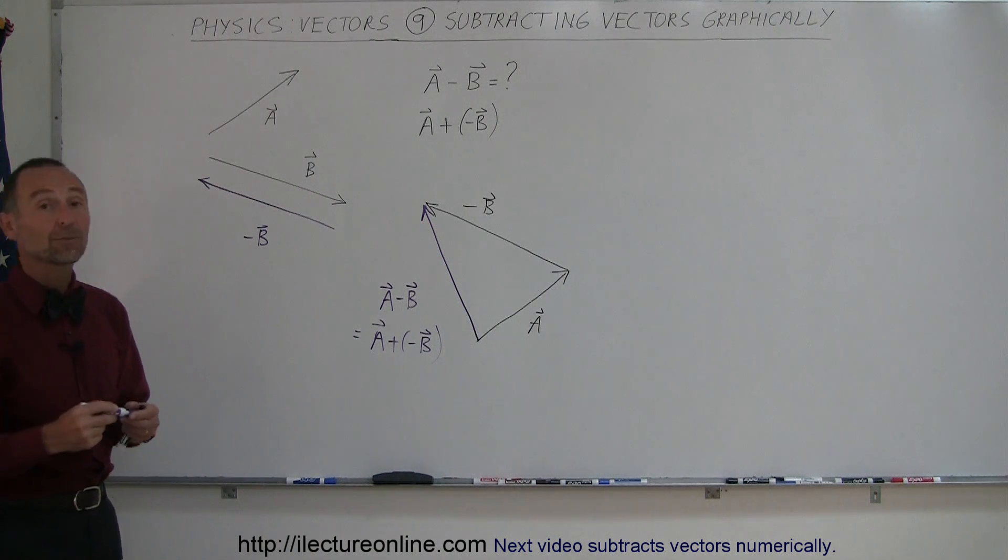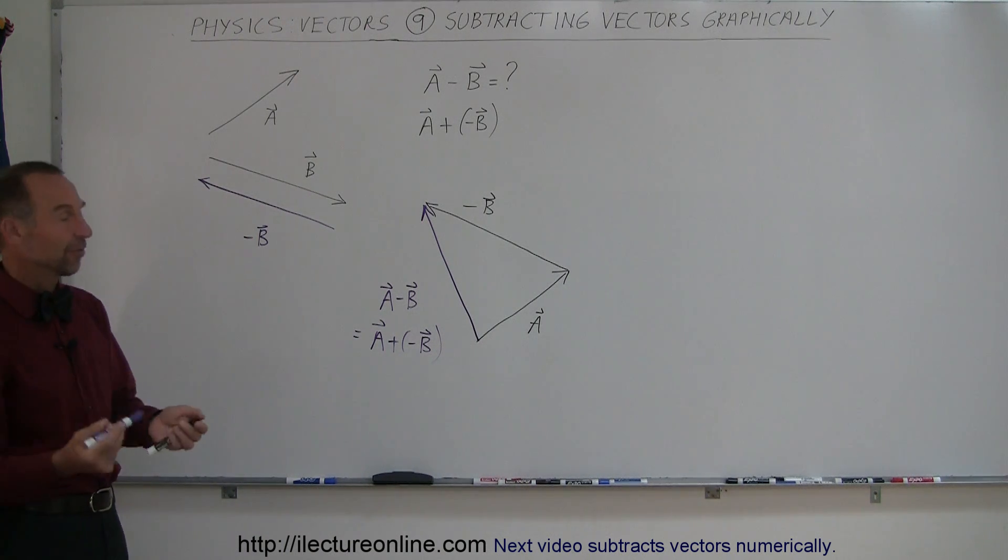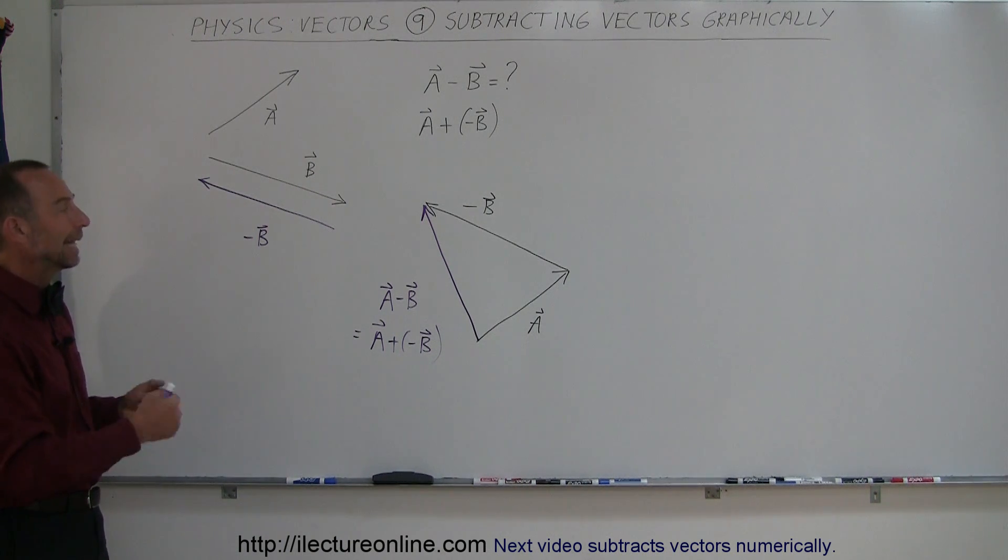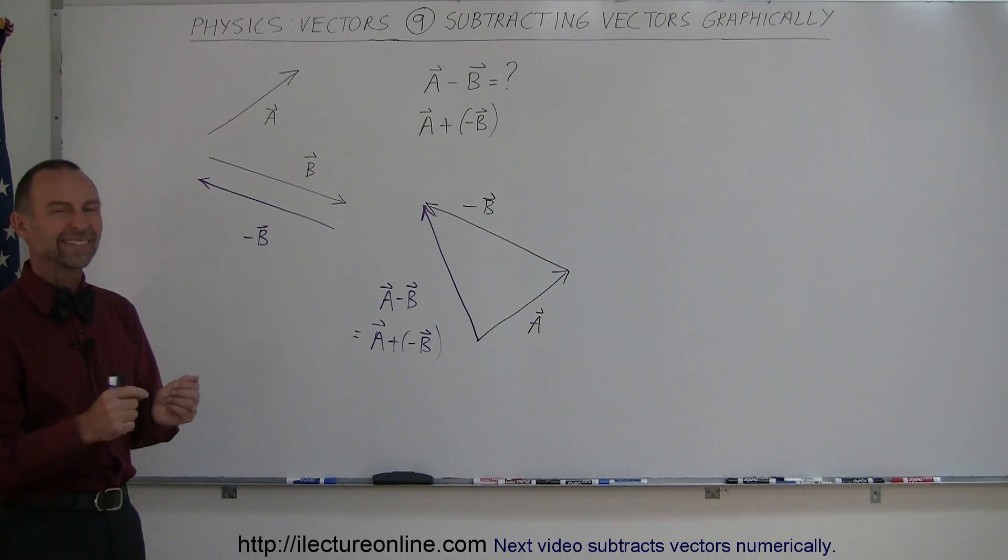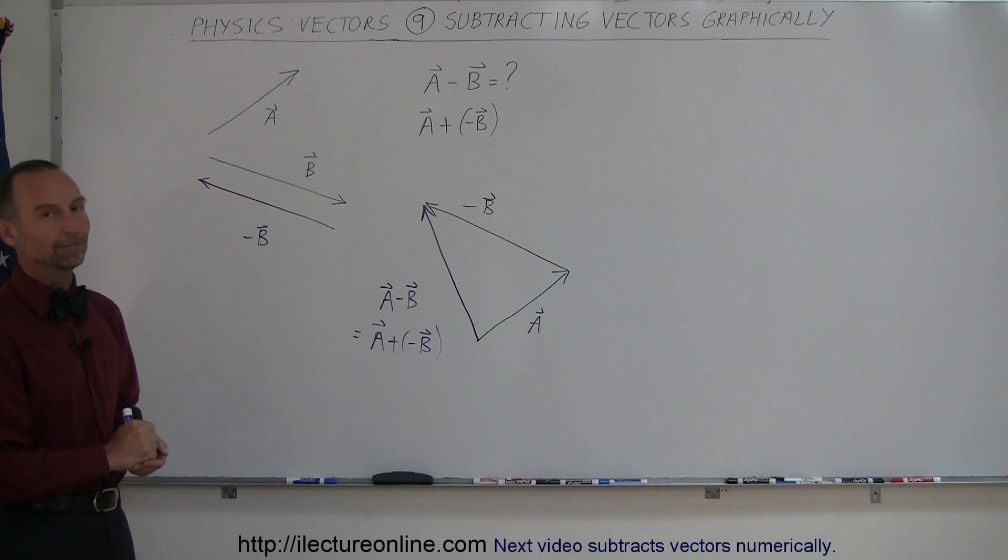Alright, that's how we subtract vectors. We simply find the negative of the second vector and then add that to the first vector to get the difference of two vectors. And that's how you subtract vectors graphically. In our next example, we're going to show you how to do that same kind of thing numerically as well.